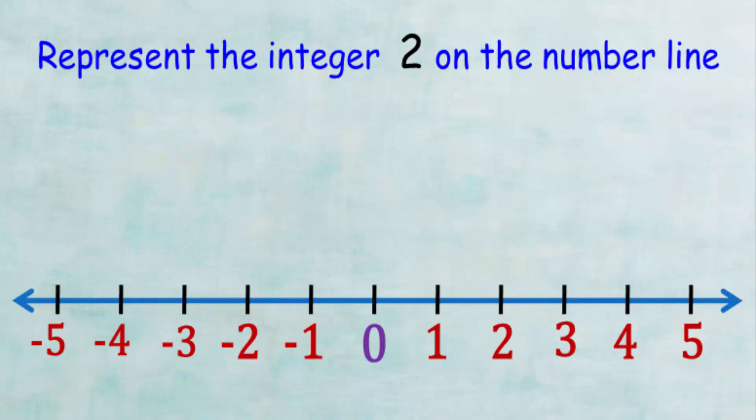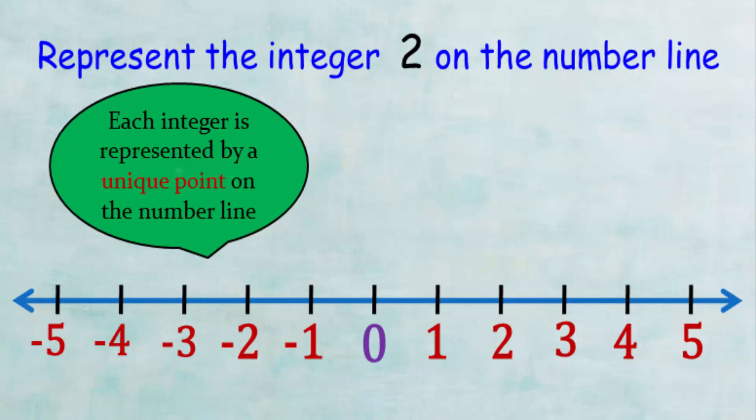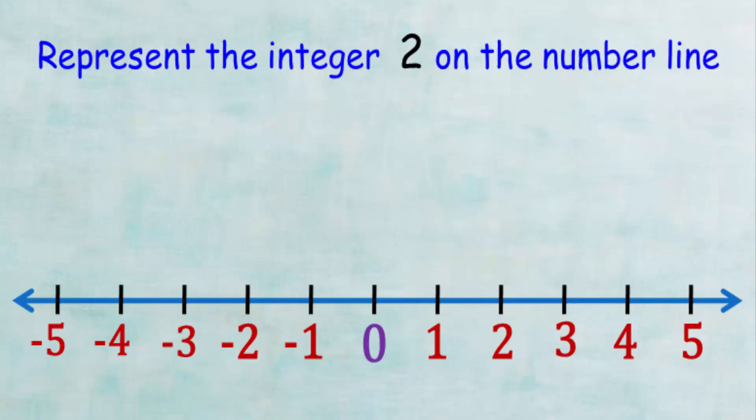Second, you have to know that each number is represented by a unique point on the number line. So to represent the positive number 2, we put a shadowed circle around the number 2 on the number line.